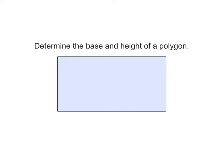In order to learn how to find the area of a shape, we first need to be able to define the base and height of a polygon. A base is a very simple definition. The base is a side.